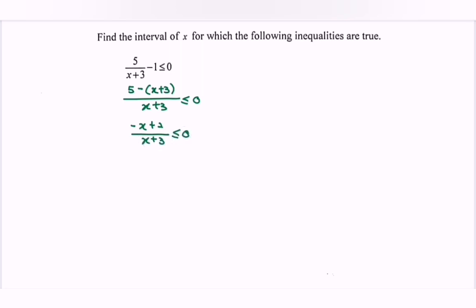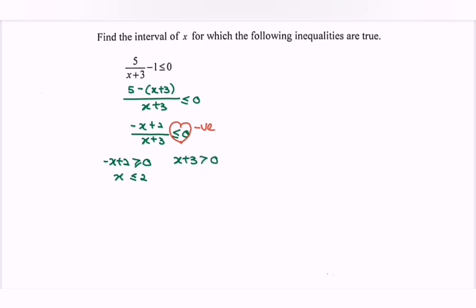Since we have the simplest form, we determine the sign where we have the negative, because less than or equals to 0. Next is to assume always positive. Negative x plus 2 greater than or equals to 0, so x is less than or equals to 2. For x plus 3 greater than 0: kindly focus on this part — we cannot equate the denominator with 0, that's why we only say greater than 0. So x is greater than negative 3.